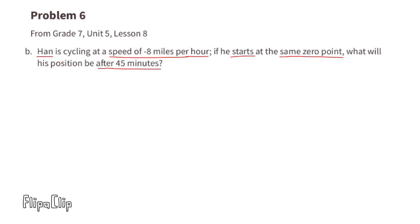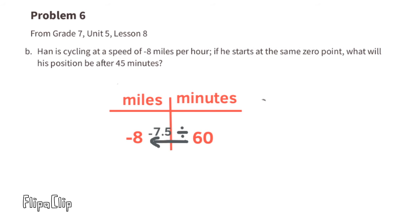Part B: Han is cycling at negative 8 miles per hour — representing a direction, such as west — starting from the same zero point. What will his position be after 45 minutes? Using a chart with miles and minutes: Han travels negative 8 miles per hour, and there are 60 minutes in an hour. 60 divided by negative 8 equals negative 7.5, so 1 minute divided by negative 7.5 equals approximately negative 0.13 miles.